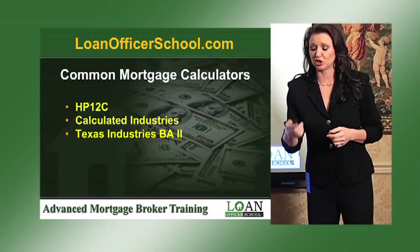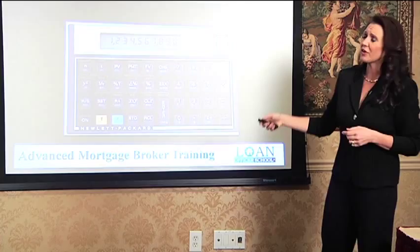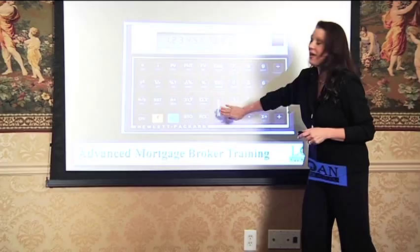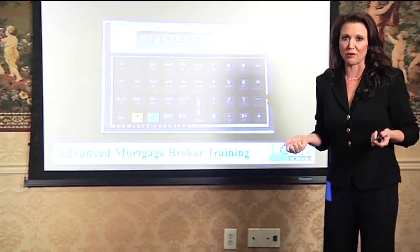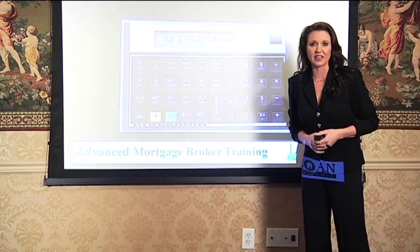This is what an HP 12C calculator looks like. You're mainly going to be using these function keys and your numbers. Now this calculator works a little bit backwards. If you wanted to do 2 plus 2, you're going to go 2, enter, 2, plus — and that is how you get the answer of 4. If you wanted to do 12 divided by 2, you're going to do 12, enter, then 2 divide, and it's going to give you the answer of 6. That's the basic math formula on this type of calculator.